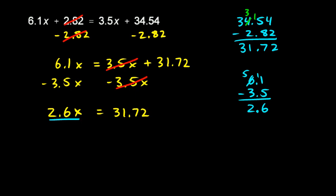Now, look at this 2.6x. That's 2.6 times x. So, to get rid of the 2.6, I need to divide. I divide that side by 2.6, because this x was multiplied by 2.6.